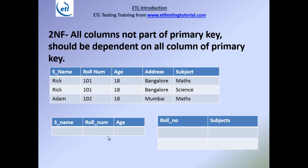The second normal form requires that all columns in a given table are directly dependent on the primary key. If a column is not dependent on the primary key, separate it into another table. Keep the primary key there as well to link the tables.